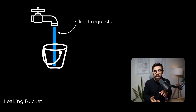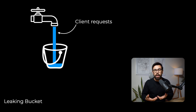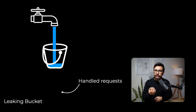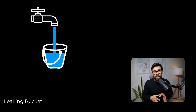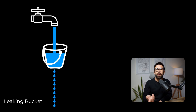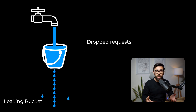The leaky bucket. Imagine you have a tap and water is flowing into a bucket, but the amount of water coming in varies during the day. That bucket is leaking, and it's that leak which allows a constant flow of water coming out. So while water coming in is unstable and unpredictable, the water leaking out is a constant flow. However, if at a given point the bucket is full, the water will overflow.